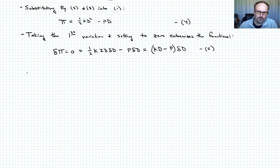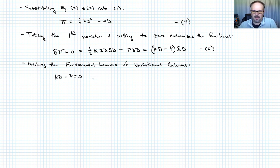So now you know what we're going to do. We're going to invoke the fundamental lemma of variational calculus. And when we do that, we end up with that k times d minus p equals zero. Which implies what? That implies that p is equal to k times d. That's f equals kx.